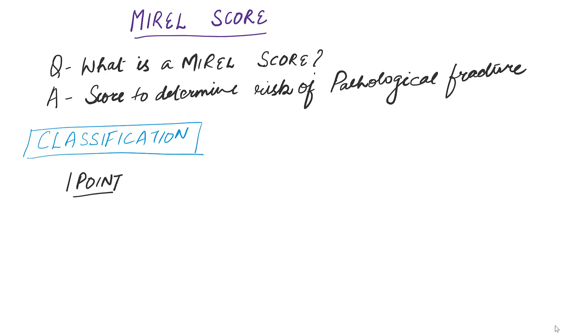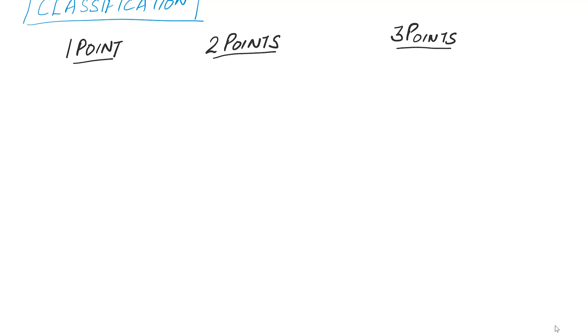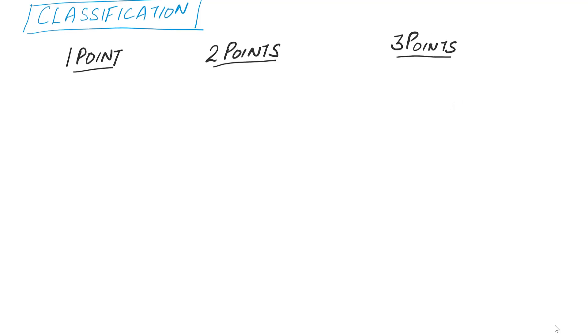We're going to have a look at how you classify MIREL score. It is basically divided into four basic things and the rating is done based upon a point system. You've got one, two, and three points based upon the following criteria. We're looking at site of the lesion, size of the lesion, how the lesion is in terms of being blastic, mixed, or lytic.